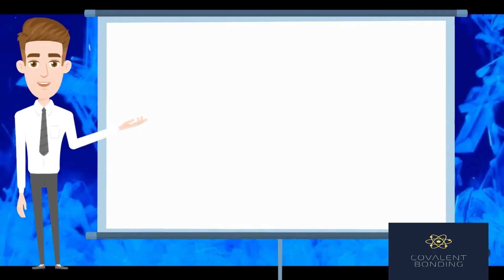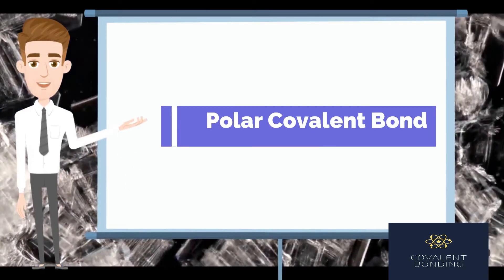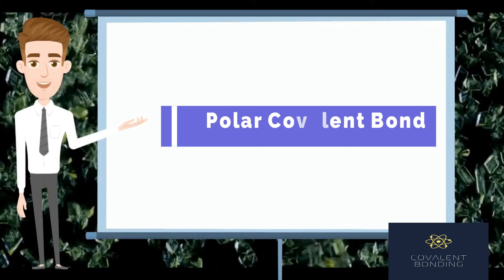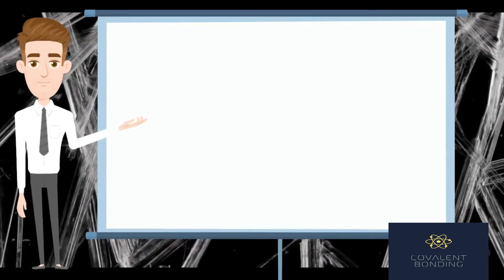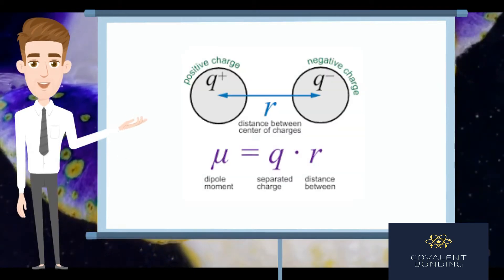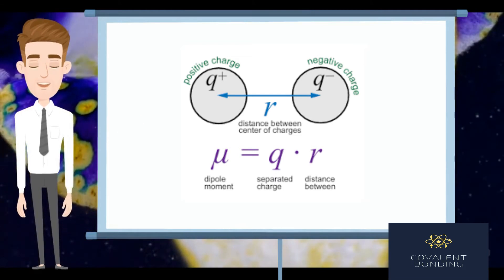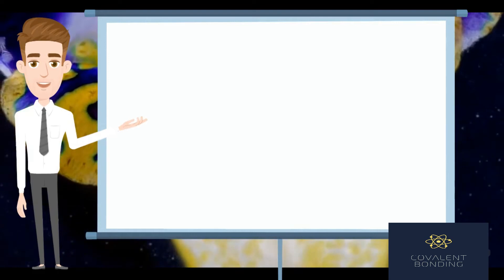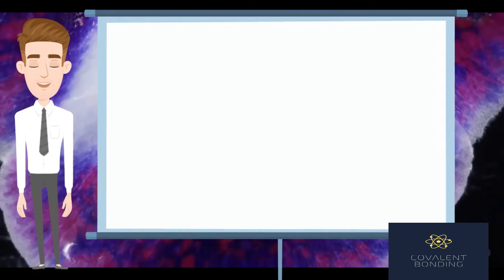A polar covalent bond is formed between non-identical atoms which differ in electronegativities. Since the two atoms differ in their capacity to attract the shared electron pair, unequal sharing of electron density results. As a result, polarity is developed in the bond and the bond is said to have a dipole moment. Dipole moment is the quantitative measure of the polarity of the molecule. A slight ionic character is imparted to this type of bond due to the difference in electronegativity between the bonded atoms, and such a bond is called a polar covalent bond.